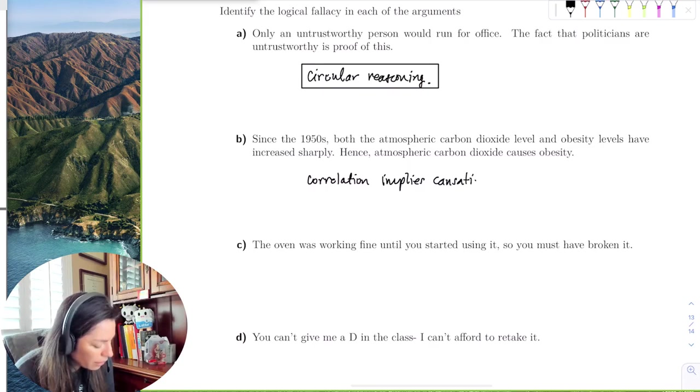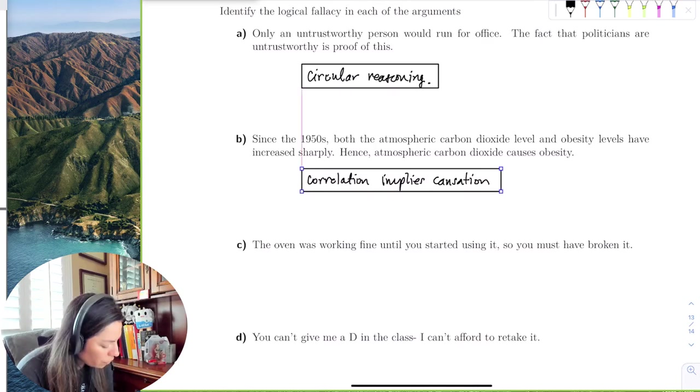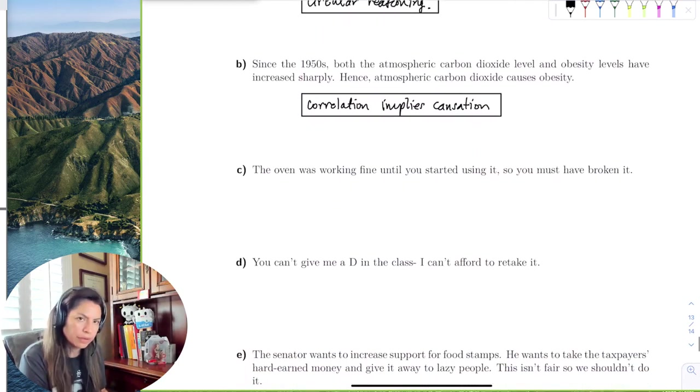So we just have to be careful here of which logical fallacy we have. But you can see that some of these are recognizable types of arguments, right?